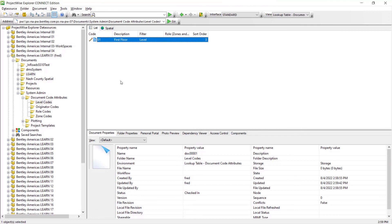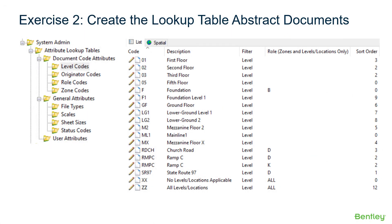We've created the first Abstract Document. Normally, you would continue manually creating the remainder of this data. However, in the next video, Part 3 of 3, we'll demonstrate how to use the Excel Import Tool to bulk create and update the Abstract Documents.